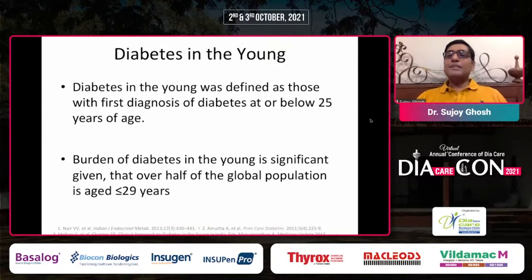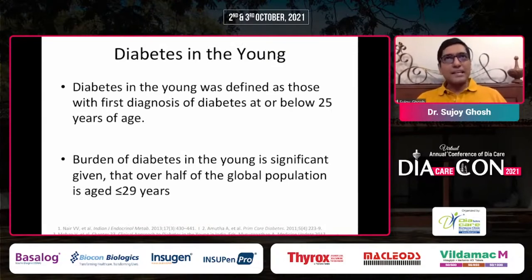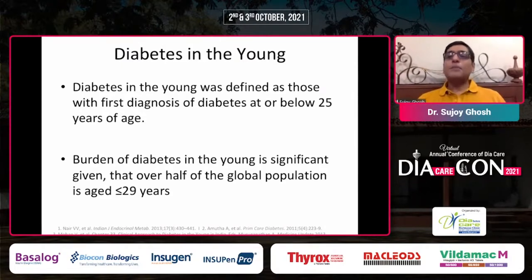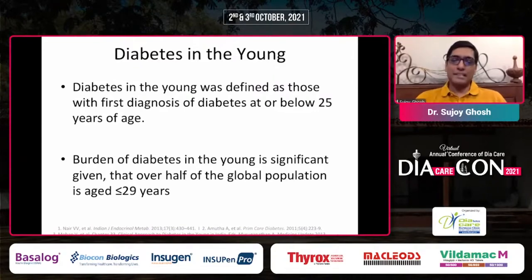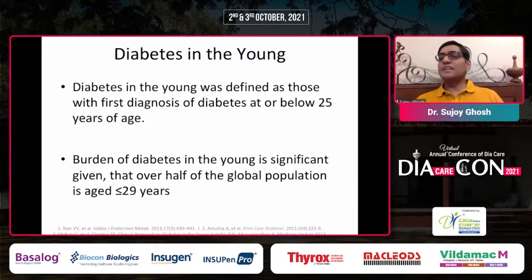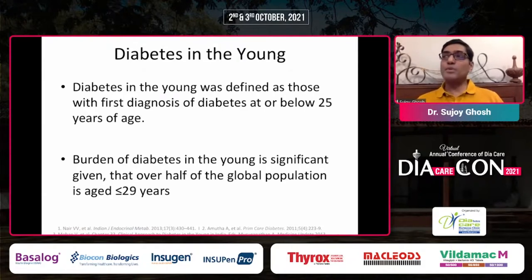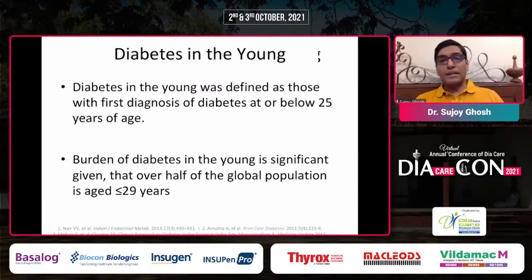Diabetes in young, or pediatric diabetes — everybody has a different definition. The internationally accepted definition is 25 years. If diabetes is diagnosed before the age of 25, it is considered diabetes in young. In India, 40% of Indians are below the age of 25, so even a small proportion with diabetes represents a very big problem. With the rising prevalence of obesity, we are probably heading towards trouble.